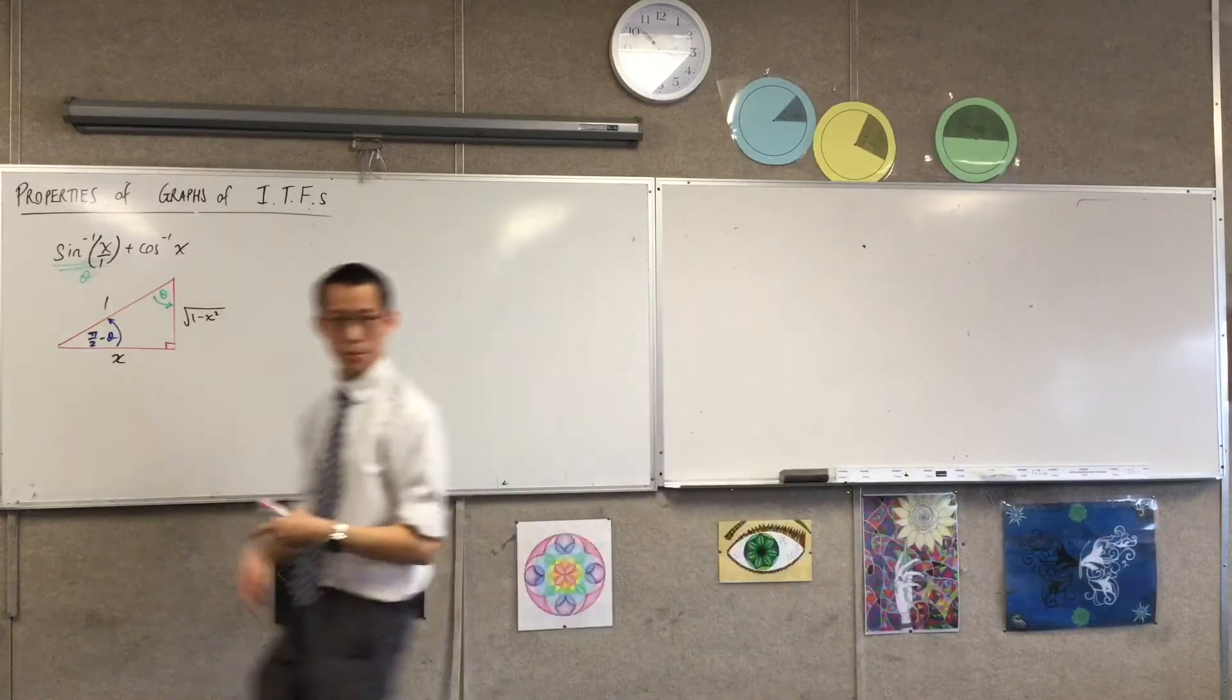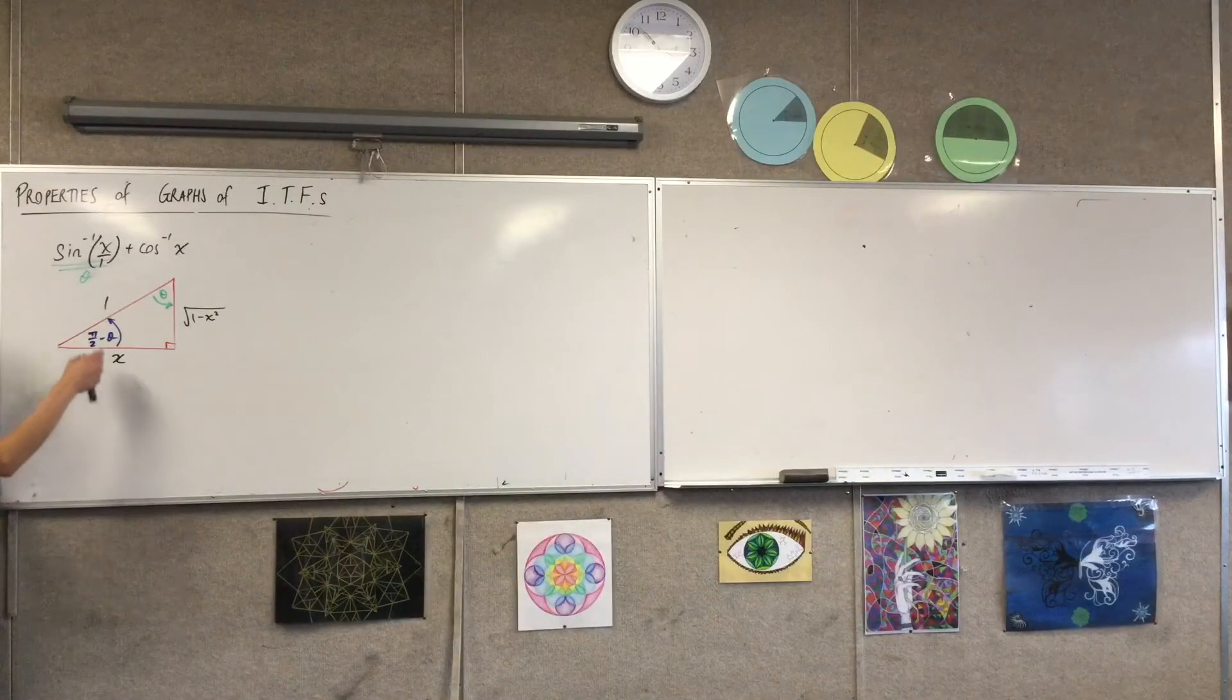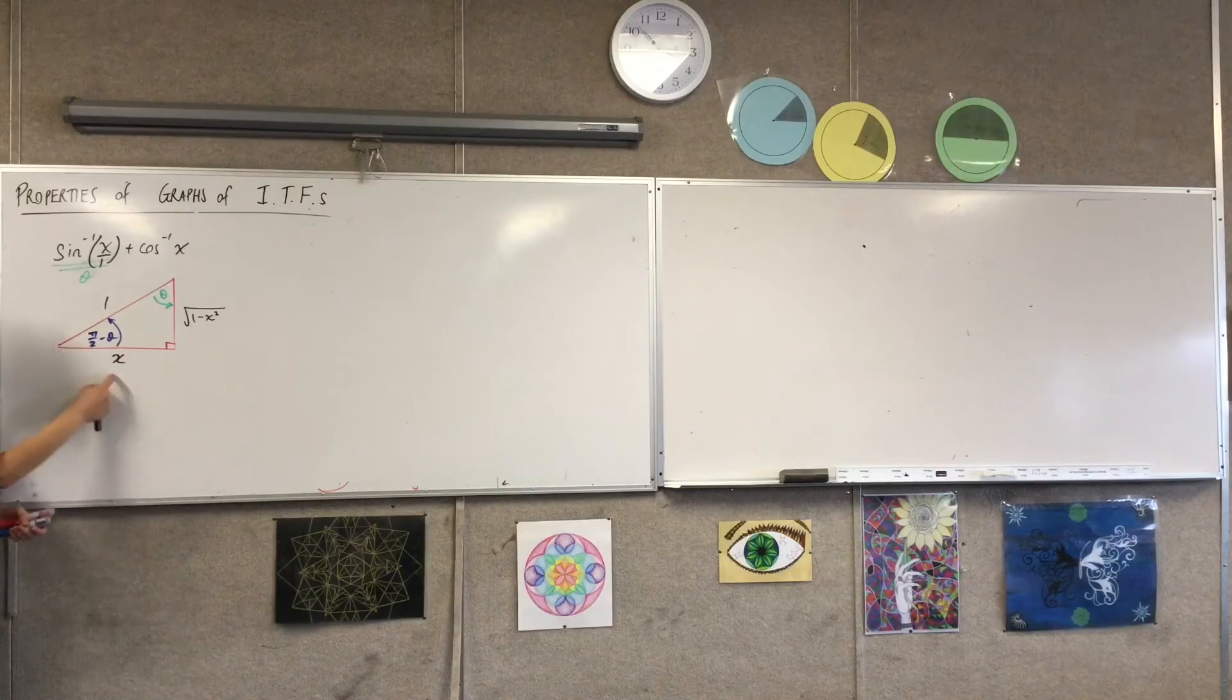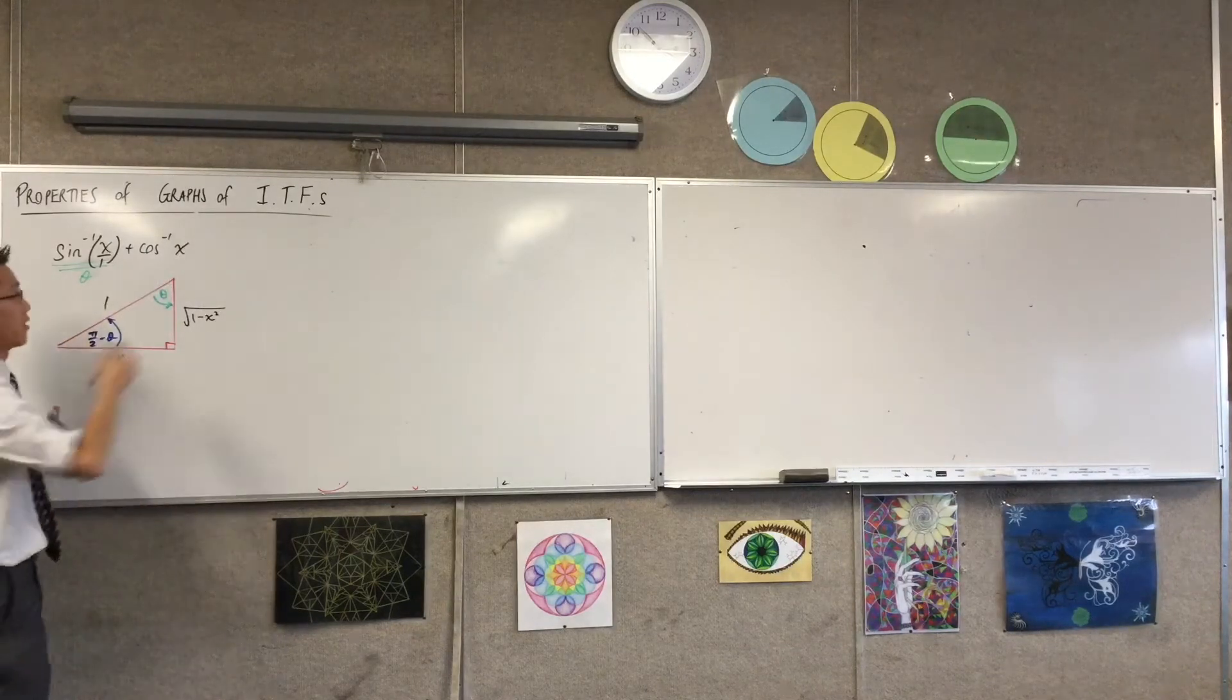Cos inverse of x is not just adjacent to hypotenuse over here. It's the opposite and hypotenuse of a different angle. Which one? Yeah, it's the opposite of hypotenuse of, sorry, the adjacent of hypotenuse of this angle. Do you see that? x over 1. There's the x over 1. It's the same one, then.